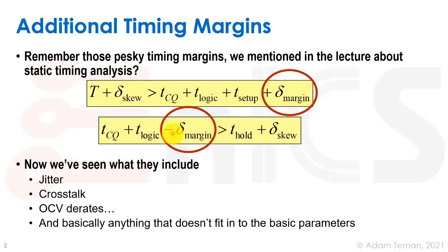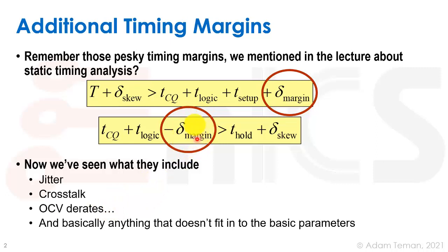After the static timing analysis lecture, we discussed what fills this delta margin. Jitter is a random phenomenon we account for in various ways, so it's clearly part of delta margin. Crosstalk adds or subtracts from timing and fits here too. OCV derates — on-chip variation — similarly belongs here. Aging and other effects also fall in. Basically, anything that doesn't fit the basic parameters goes into this margin to improve yield.